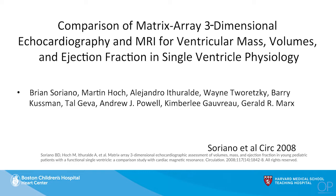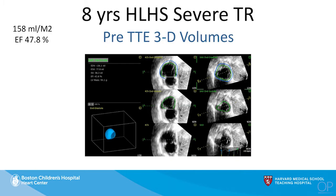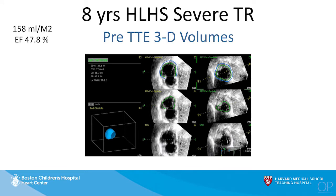Brian Soriano, in our laboratory several years ago, published a position paper in which we measured RV volumes by 3D echo and compared those to MRI. On the basis of this paper, we've been able to measure RV volumes in our patient using the semi-automated detection algorithm. We measured the RV volume at 160 mLs per meter squared with an ejection fraction of 47%. Based on these two-dimensional and three-dimensional images, we had a clear impression.